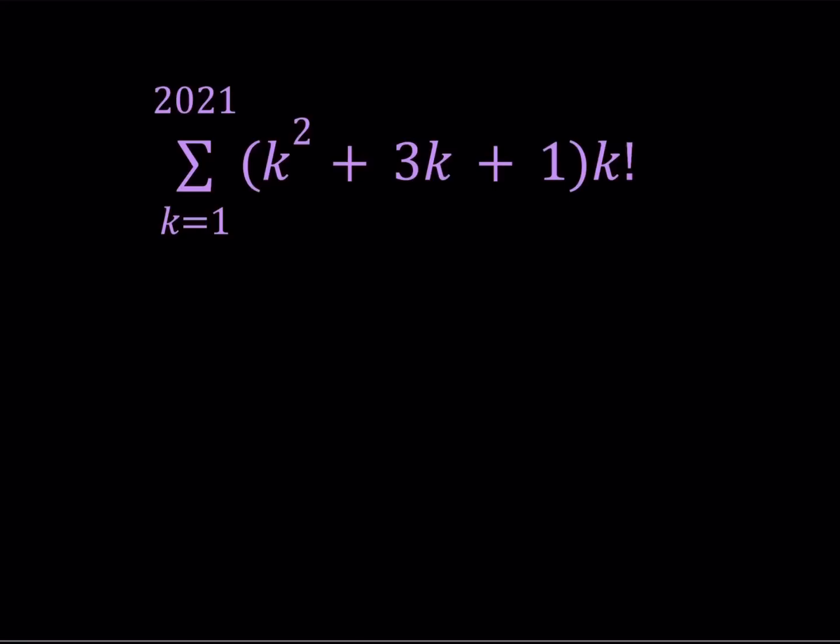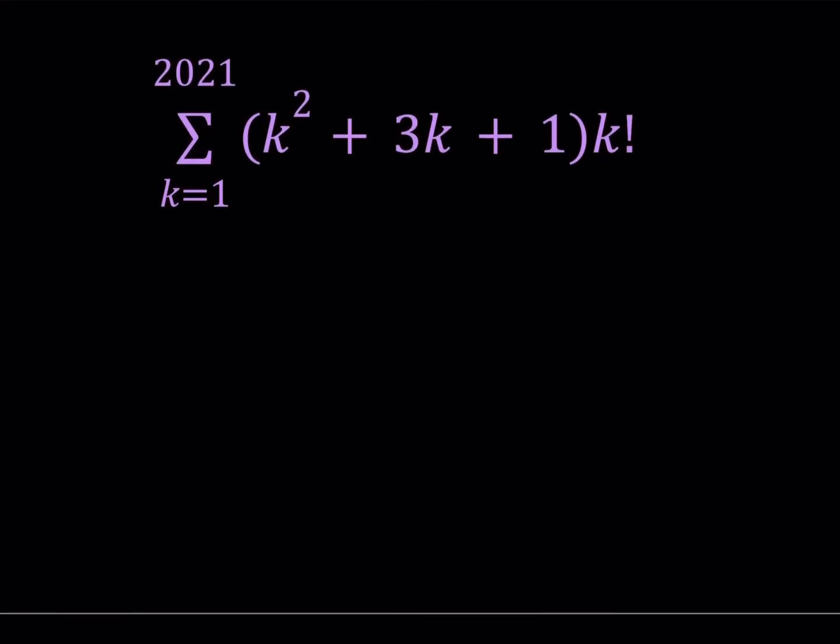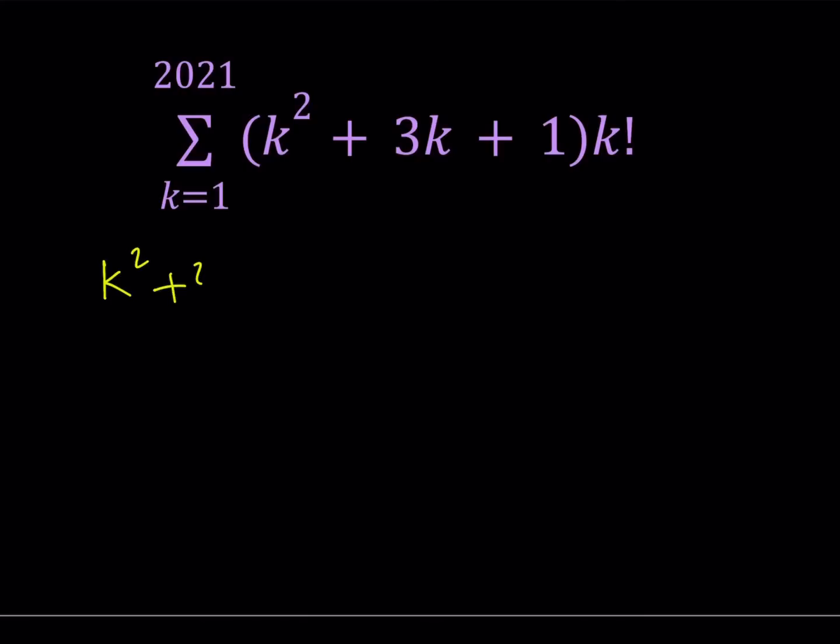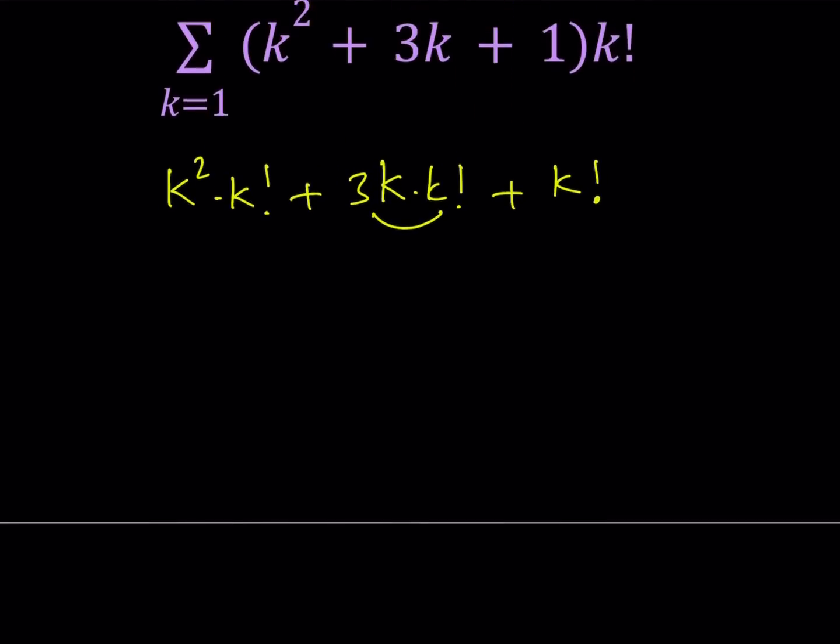Let's see how we can handle this. We have the expression inside the parentheses, k squared plus 3k plus 1. One method here could be to distribute this. If I distribute, I'll get k squared times k factorial, then 3 times k times k factorial, plus k factorial. If you separate these three quantities, we could probably find something because k times k factorial can be summed pretty easily.